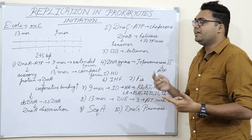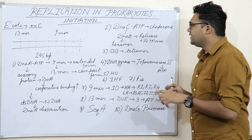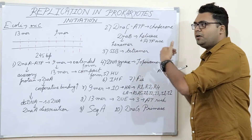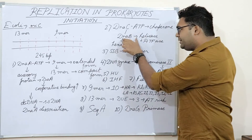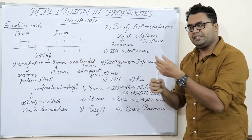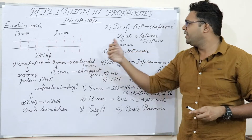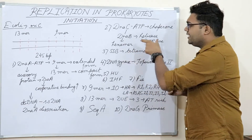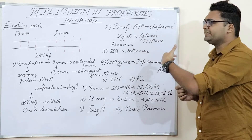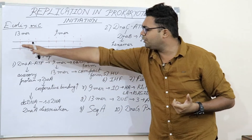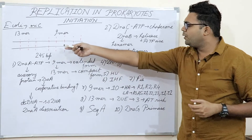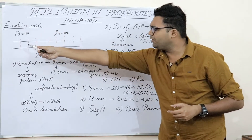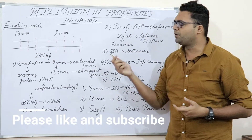DnaB helicase is a hexameric ATPase that also needs ATP for its work to initiate the denaturation process. The hexameric DNA helicase is associated with six monomers of DnaC to load it. As per the latest research, DnaB helicase cannot start de novo denaturation on its own — if all bonds within the 245 bp ORI are completely associated, DnaB cannot start denaturation.